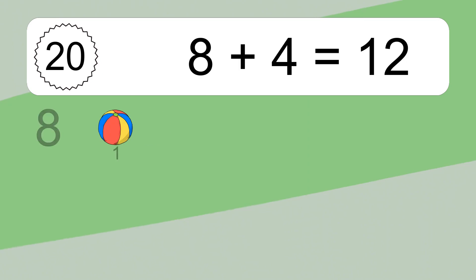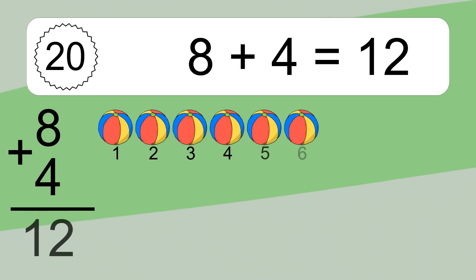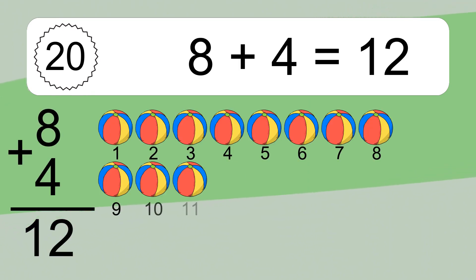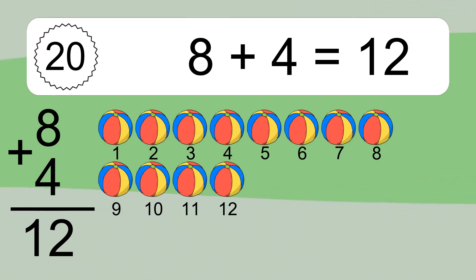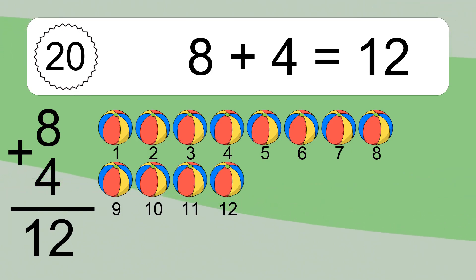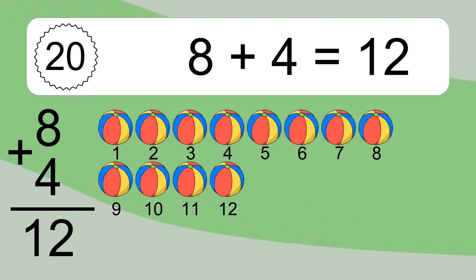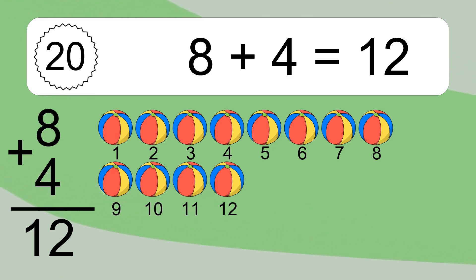8 plus 4 equals what? 8 plus 4 equals 12. Let's count it: 1, 2, 3, 4, 5, 6, 7, 8, 9, 10, 11, 12.